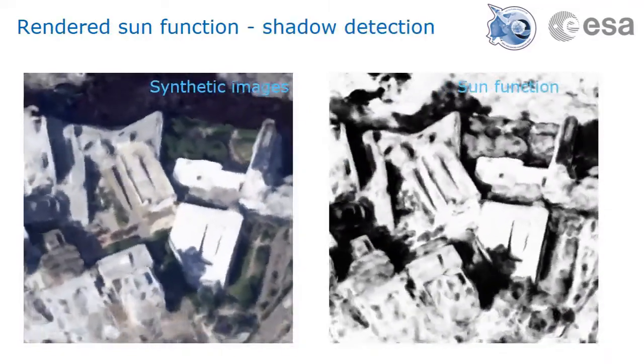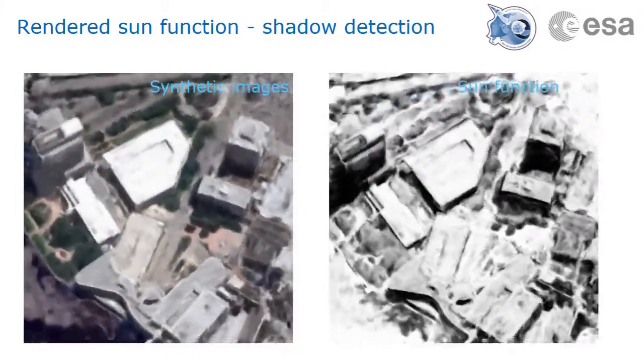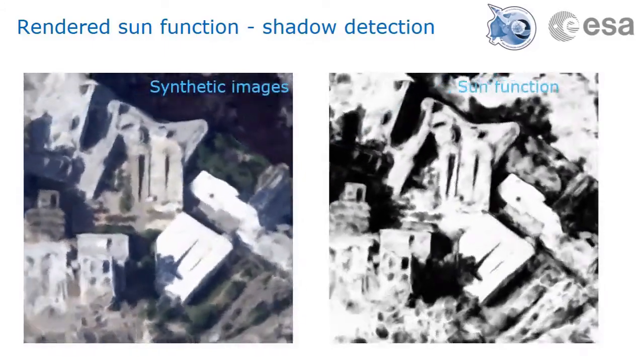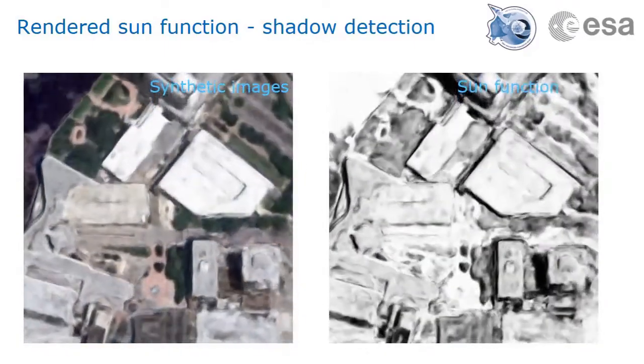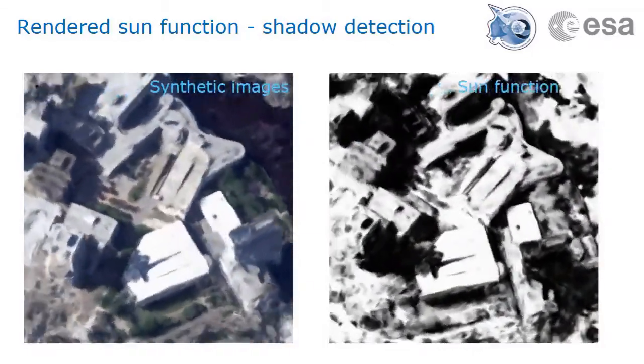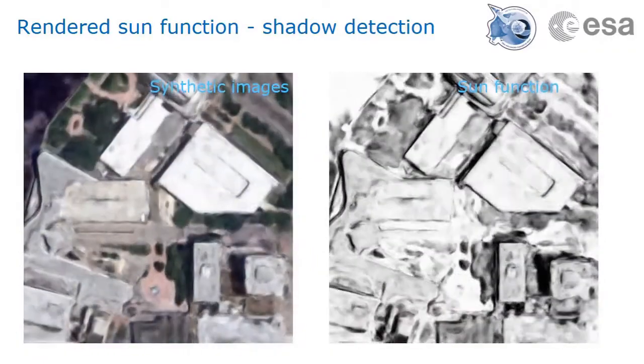We can also visualize the value of the sun visibility function at the surface. In this rendering, white represents a high amount of incoming solar light and black represents shadows. We can see that the network has learned to properly shade the facades of buildings, even the ones that are always in the shadow in the dataset. This demonstrates how Shadow NeRF can also be leveraged as a 3D shadow detector.